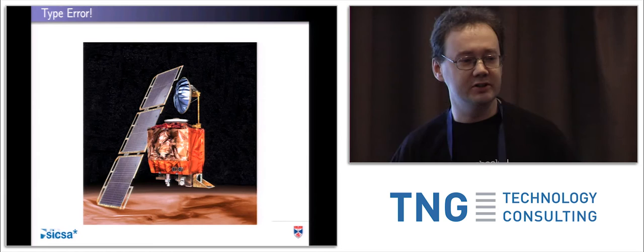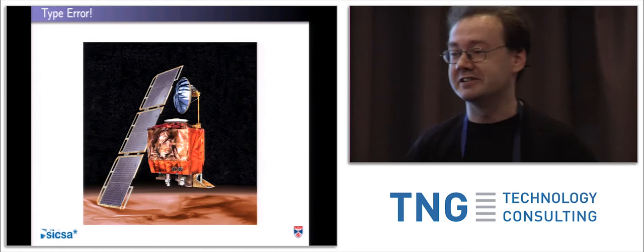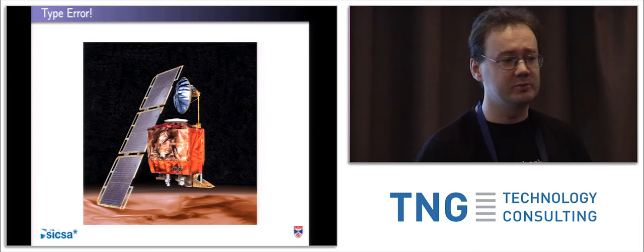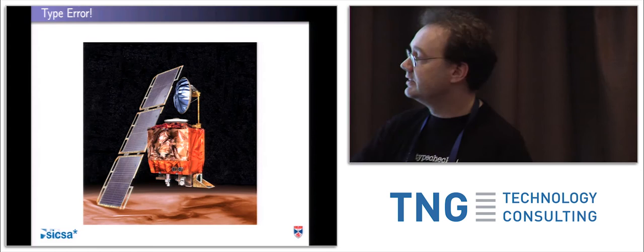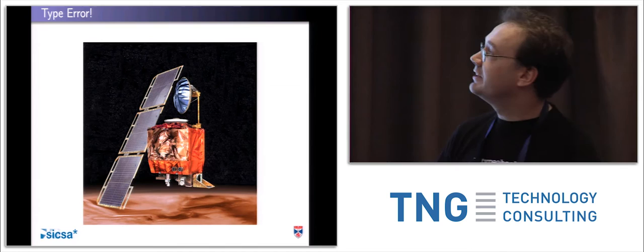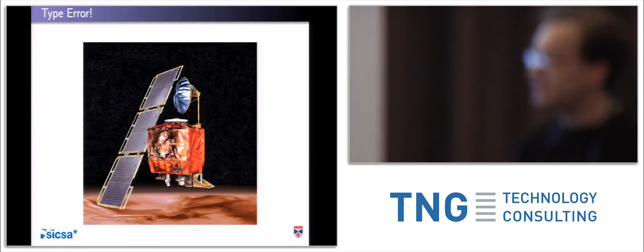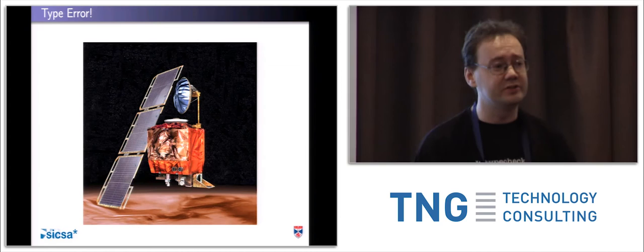Now, we can just reboot our laptops, but if you have one of these — does anyone have one of these? Nobody has one of these anymore. This is the Mars Climate Orbiter, which NASA sent to Mars in 1999. The intention was that it would communicate with the Mars Polar Lander, relaying climate information back to Earth. What it actually did was crash straight into Mars, which is why this is an artist's impression rather than a photograph. The reason it crashed was a type error: there was some code working in imperial units and some code working in metric units, and this didn't get on.